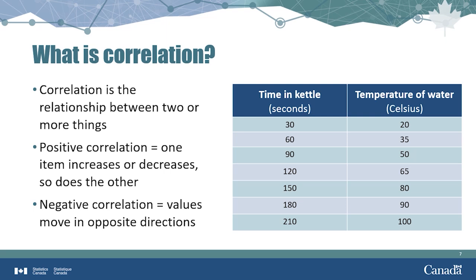For example, imagine you've taken a freshly brewed cup of tea outside on a winter day. The more time you spend outside, the colder your tea will become. In this case, as the time variable increases, the temperature decreases.